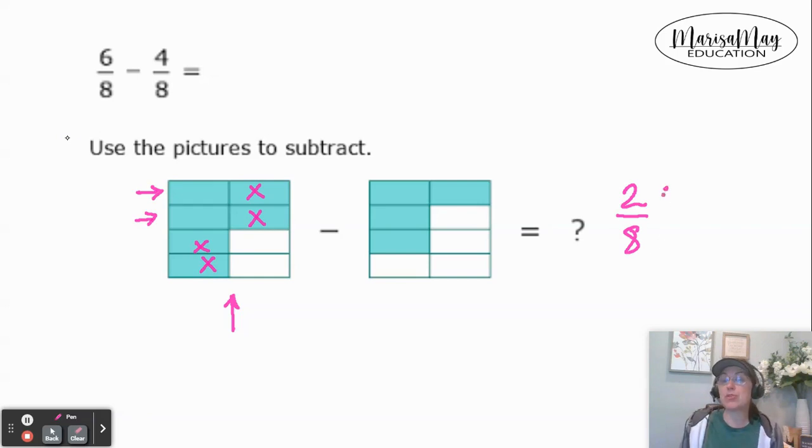2 eighths - both of those are divisible by 2. So 2 divided by 2 gives us 1 and 8 divided by 2 gives me 4. I'm left with 1 fourth as my answer.